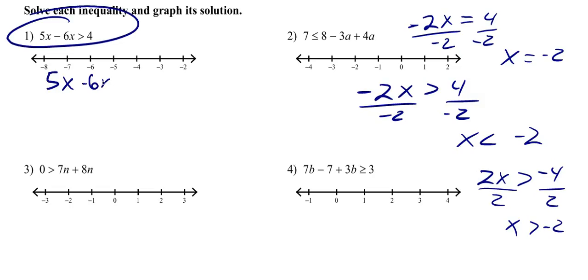5x minus 6x is going to be greater than 4. Just like solving equations, you're going to combine like terms first.